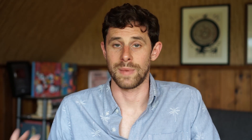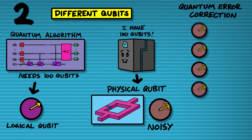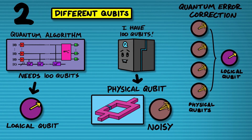Theoretically there's a way of getting around noise in qubits using a technique called quantum error correction, where you use multiple physical qubits to simulate one logical qubit. How many physical qubits you actually need to simulate a logical qubit depends on how good quality those physical qubits are. The higher quality they are, the fewer you need, but estimates range from around 10,000 physical qubits down to 100 physical qubits per logical qubit.